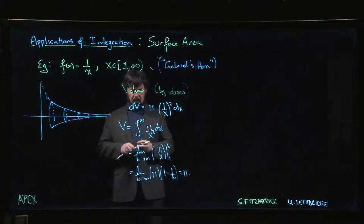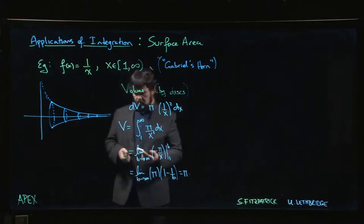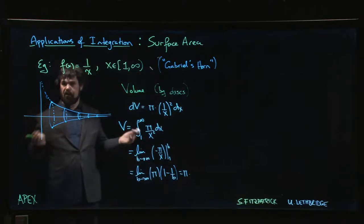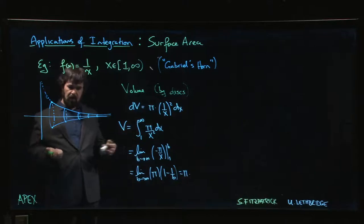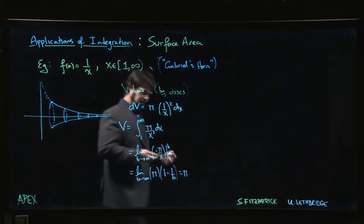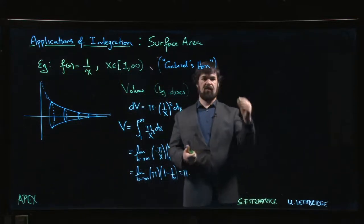So we get a finite volume, relatively small. We can fill the cone. So you imagine like you're filling it with paint or ink or something. You can fill the horn. Well, if you can fill it with paint, then surely you can coat it with paint, right? Well, let's see.